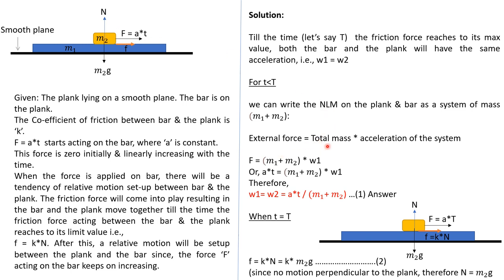So external force will be total mass times acceleration of the system, Newton's second law. So F, the external force, is equal to m1 plus m2 times w1. You can replace F with a times time. And from there we got w1 equals w2 equals a times t divided by m1 plus m2. So that is one part of the motion.